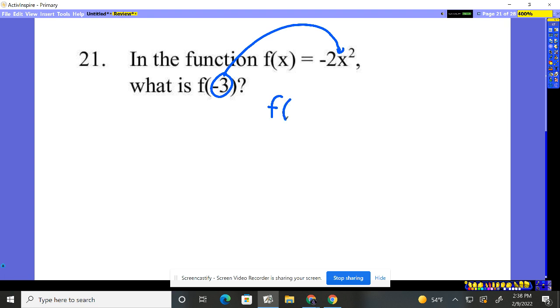So F of negative three is equal to negative two times X's values, negative three. So we want to do negative three squared, then multiply by negative two. We've got to follow the order of operations.